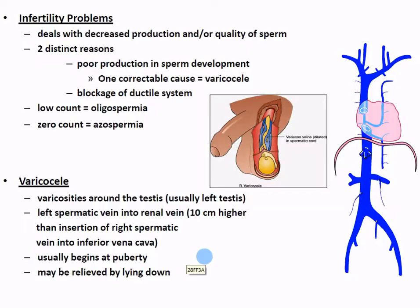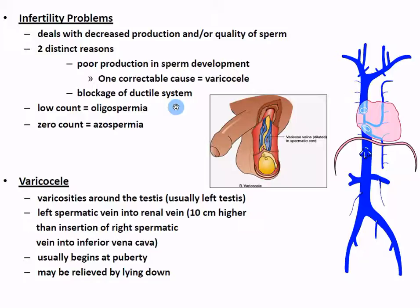Infertility problems typically relate to sperm production or quality. One correctable cause is a varicocele - essentially varicose veins of the testes. Blood isn't moving efficiently through the spermatic cord, so the tissue isn't nourished appropriately and sperm can't develop well. Another problem is blockage of the ductal system from a tumor, compression, or scar tissue on the vas deferens or epididymis anywhere along the passageway. The outcomes are oligospermia (low sperm count) or azoospermia (zero count). Varicoceles are often described as looking like a bag of worms in the scrotum.